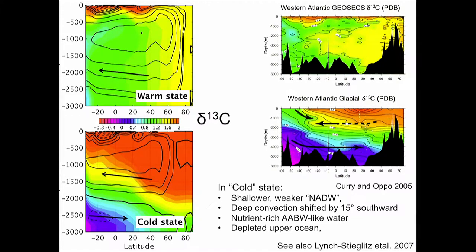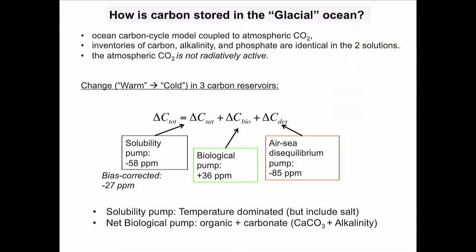In our model we don't have δ¹³C but we have phosphate, which we can convert into a proxy for δ¹³C. What I'm plotting is the δ¹³C inferred from our simulation compared to δ¹³C from observations. Obviously it's not perfect — we have a square basin and a flat bottom. An interesting comparison: if we take those two states and drive a carbon cycle model with them passively — meaning atmospheric PCO₂ is not feeding back on the climate — those two systems have a difference in atmospheric PCO₂ of about 100 ppm.